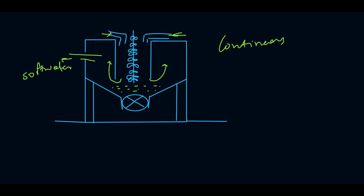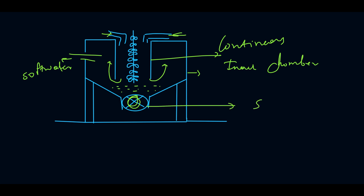The continuous process continuously gives us soft water. When we want to clean it, we open this valve so all the sludge is cleaned out. The inner part is called the inner chamber and the outer part is called the outer chamber. This valve here is the sludge outlet.